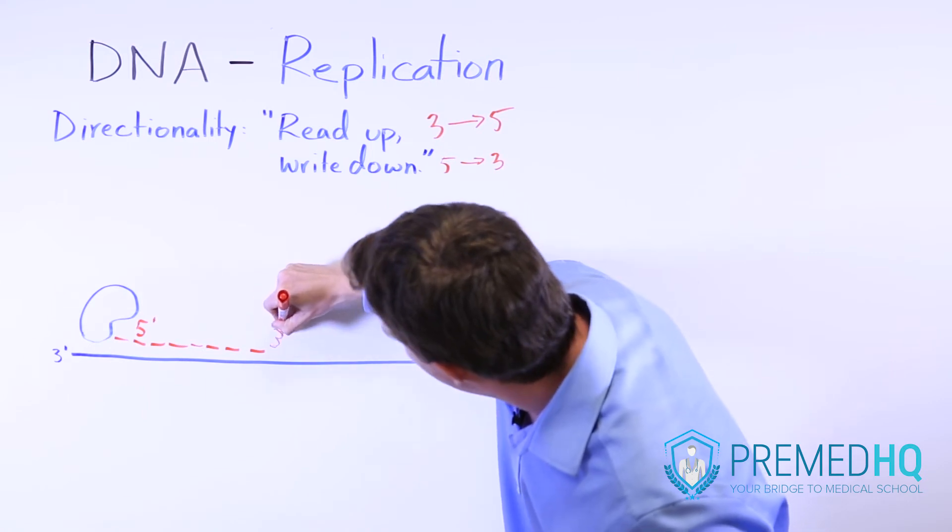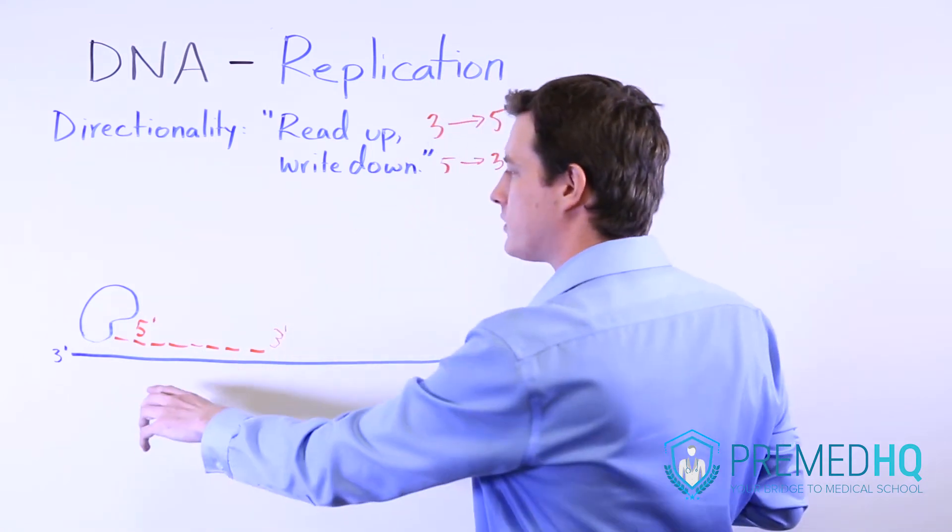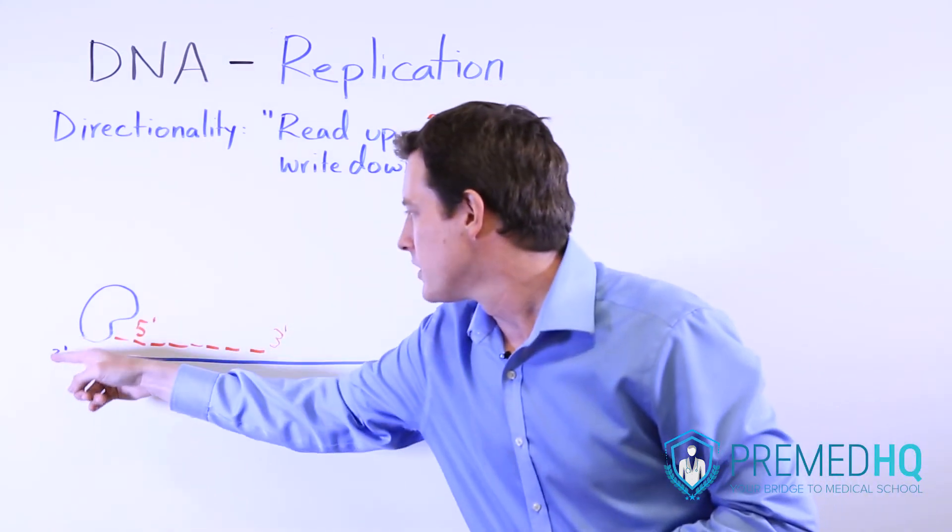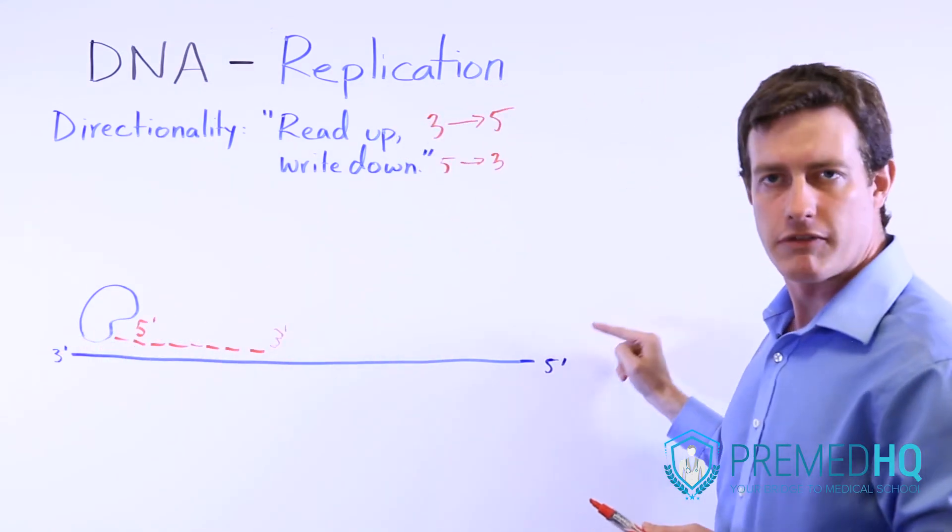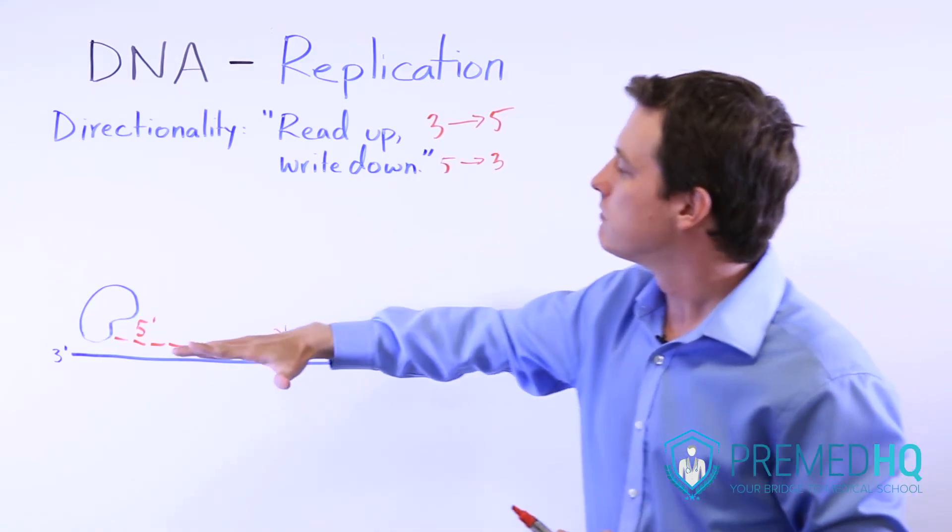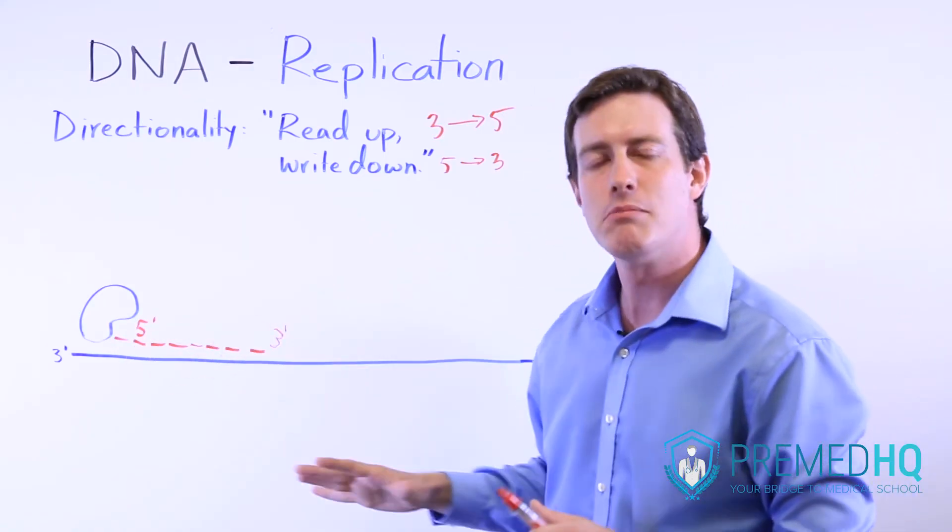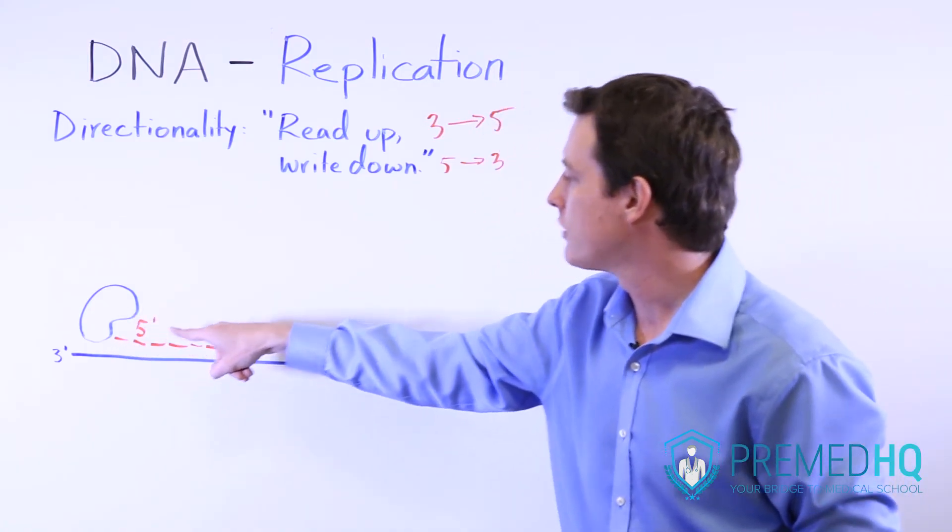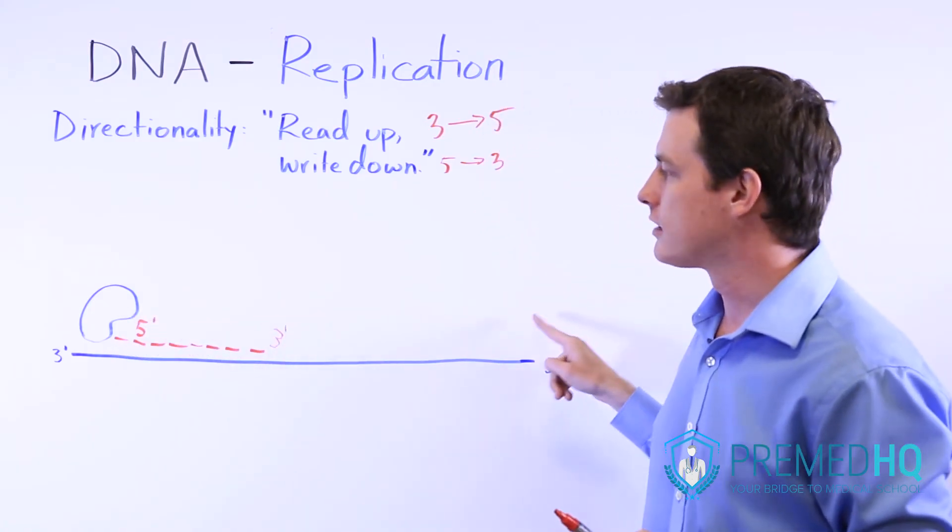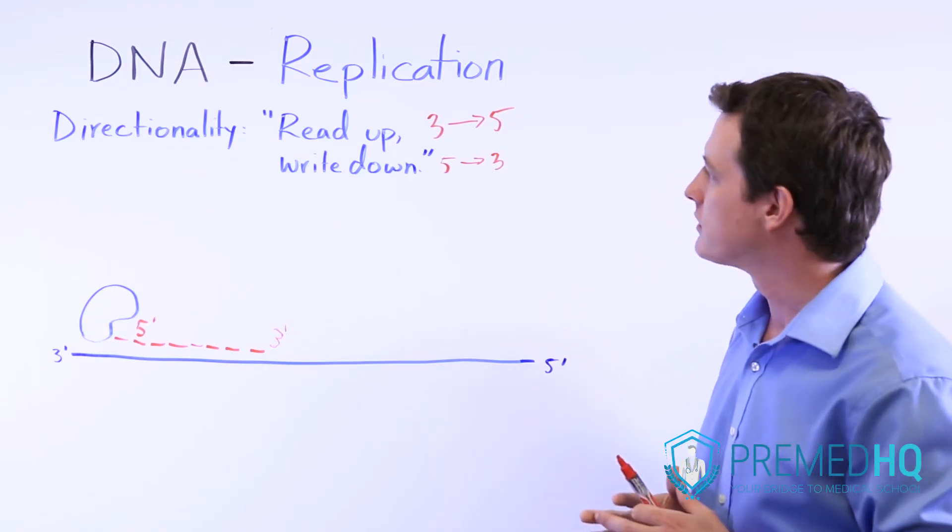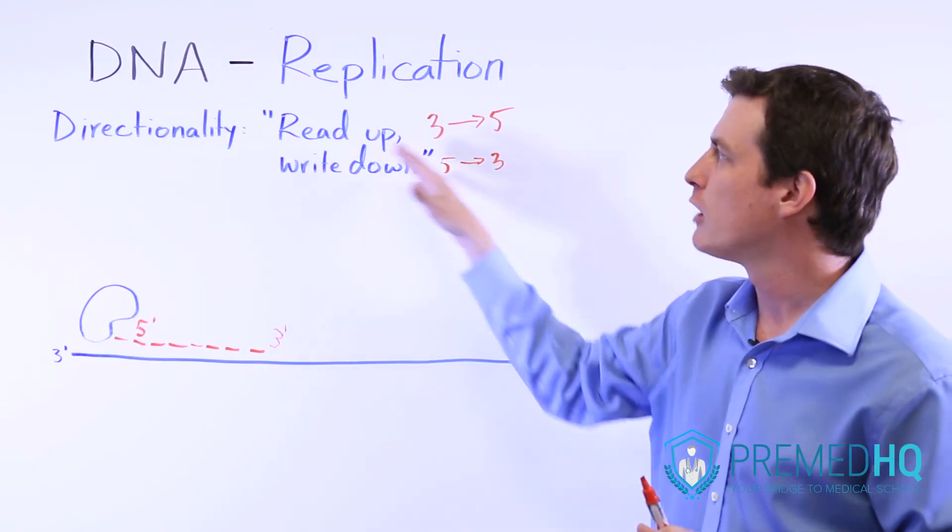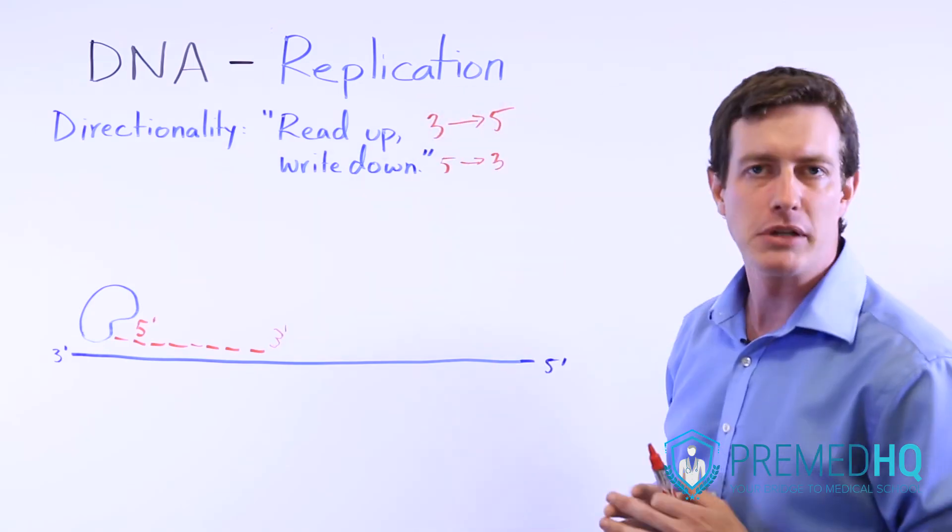What that essentially means is that it's going to work with a template strand, and it's going to start from the three end and move toward the five end. But as it writes and produces this new strand, remember, it's anti-parallel. So it will start with the five strand and move toward the three prime direction. Read up and write down is a good way of understanding the directions through which DNA replication occurs.